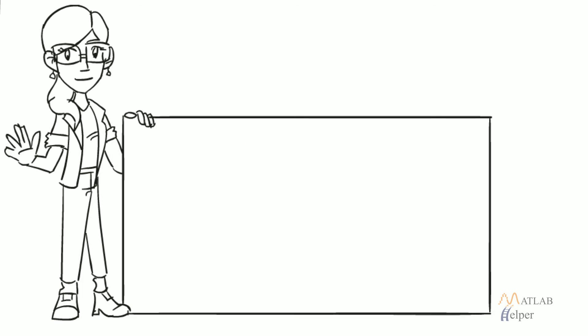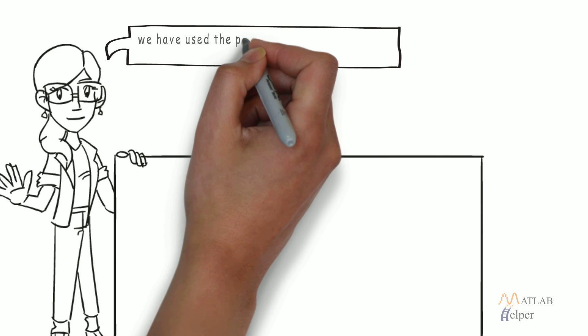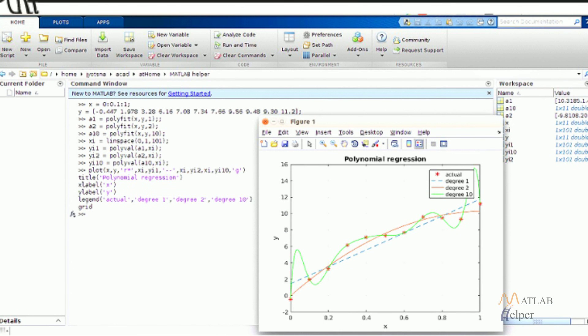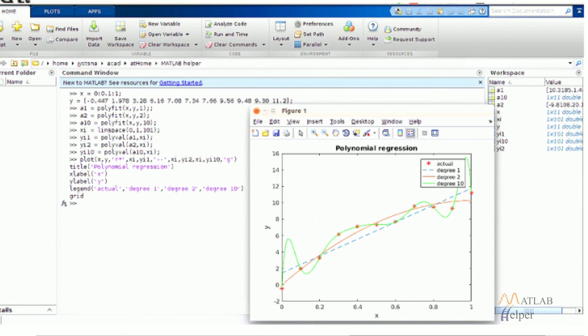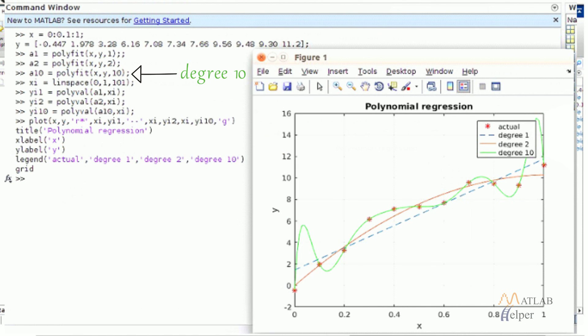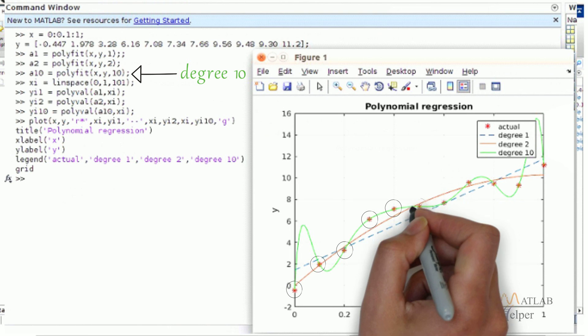In the next example, we have used the polyfit function to draw curves of degree more than one. As visible in the figure, the curve obtained from polynomial regression of degree 10 covers all the points and visibly is the best fit for all the points.